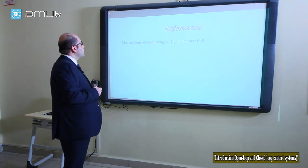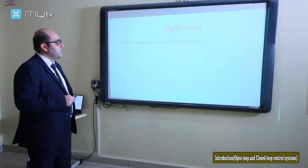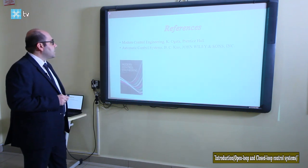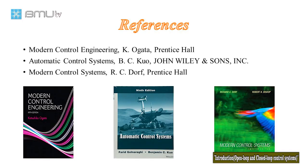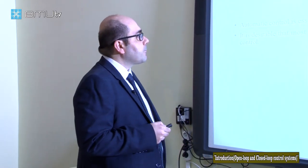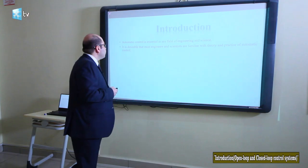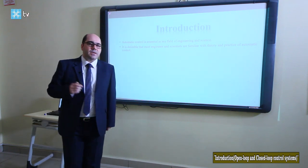The references we will use during this course are: first, Modern Control Engineering by Ogata; second, Automatic Control Systems by Benjamin Kuo; and third, Modern Control Systems by Dorf. These three books are very important for the study of automatic control systems.